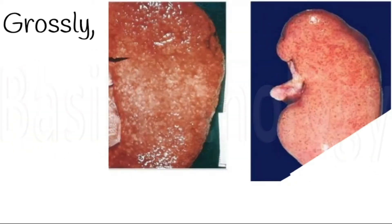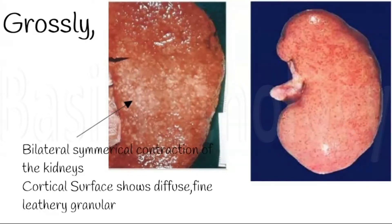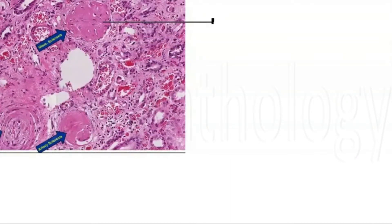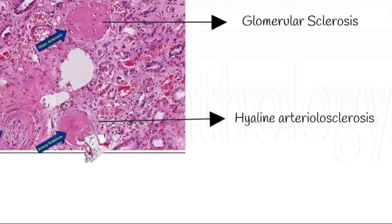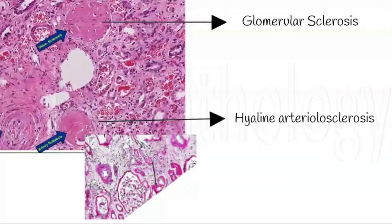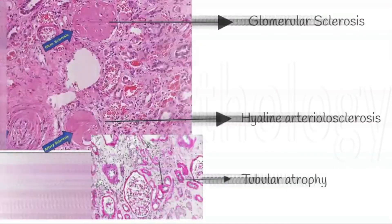Grossly, both kidneys are contracted symmetrically and the cortical surface shows diffuse fine leathery granularity. Microscopically, we can see glomerulosclerosis with pink hyaline deposits and fibrosis of the glomeruli, hyaline arteriolosclerosis with pink deposits on the arteriolar and small arterial walls, and small atrophic tubules with increased interstitial space.